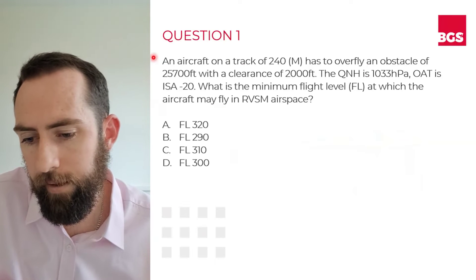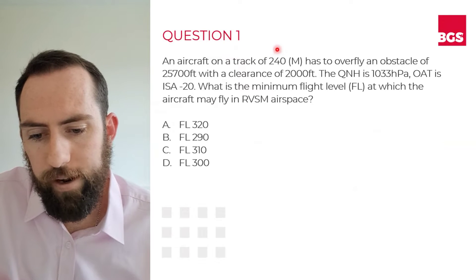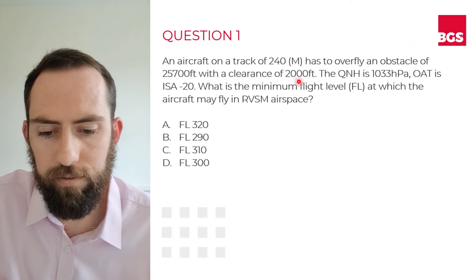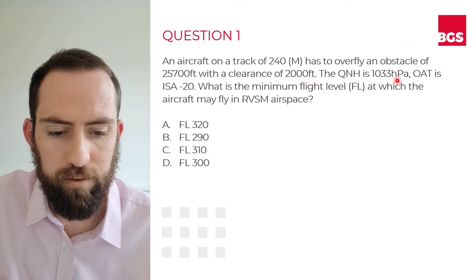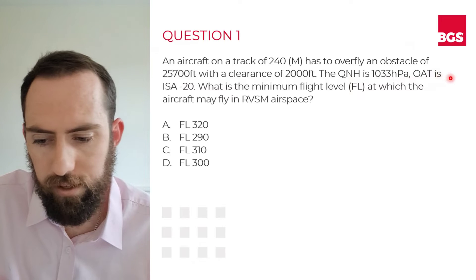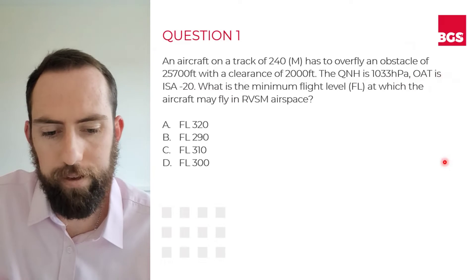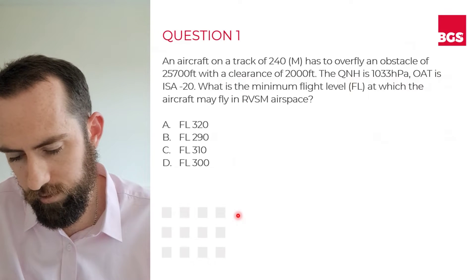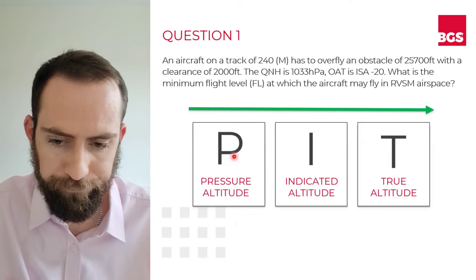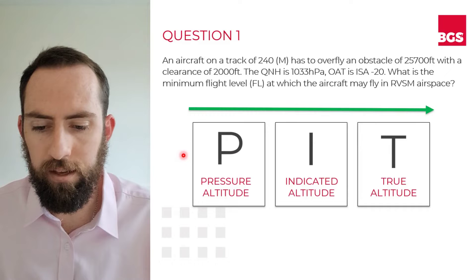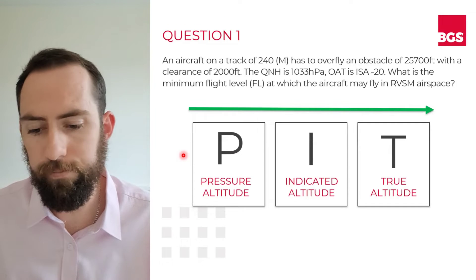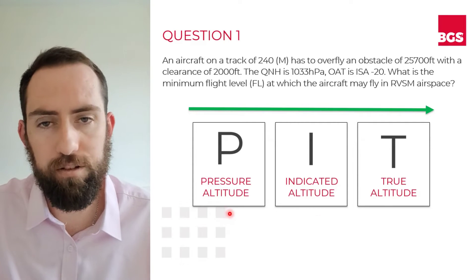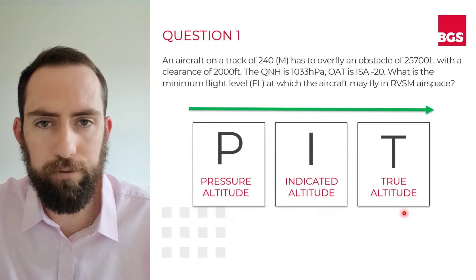Please follow along with me as I read the question. An aircraft on a track of 240 magnetic has to overfly an obstacle of 25,700 feet with a clearance of 2,000 feet. The QNH is 1033 hectopascals. Your outside air temperature is ISA minus 20. What is the minimum flight level at which the aircraft may fly in RVSM airspace? I'd like you to remember the word PIT, with P standing for pressure altitude, I for indicated altitude, and T for true altitude.